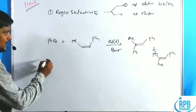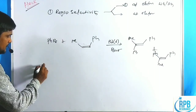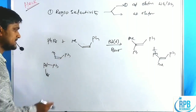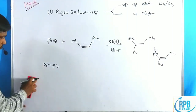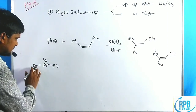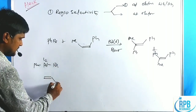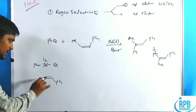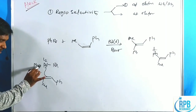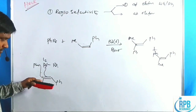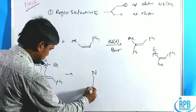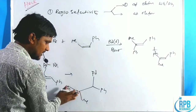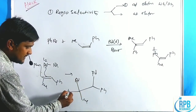Phenyl bromide undergoes oxidative addition to give phenyl-Pd(L₂)-Br. The alkene inserts — in cis-2-butene the methyl groups are on the same side. The π-bonded electrons shift toward palladium, and phenyl attacks the alkene. This creates a sigma complex where palladium, R group (phenyl), R' group, and two hydrogens are arranged around the C-C bond, with methyl and phenyl groups on adjacent carbons.